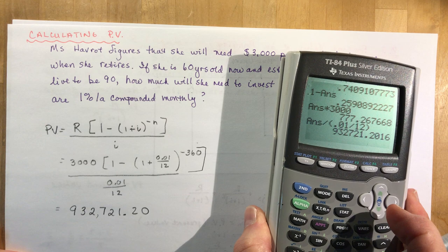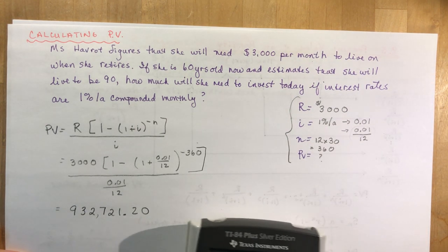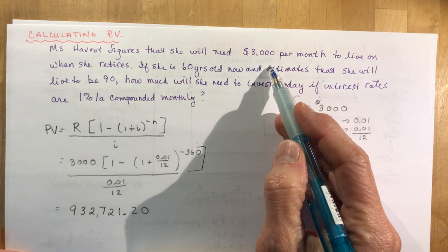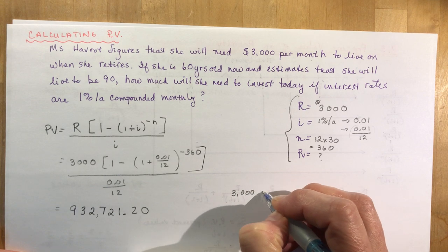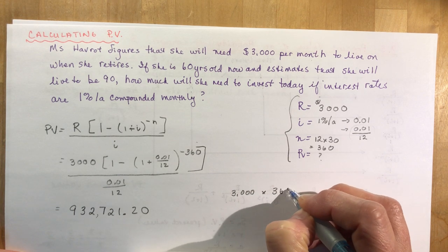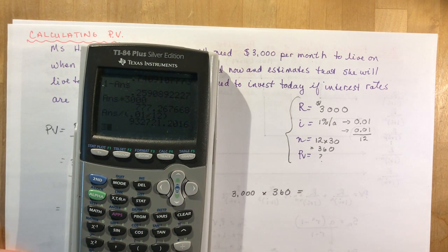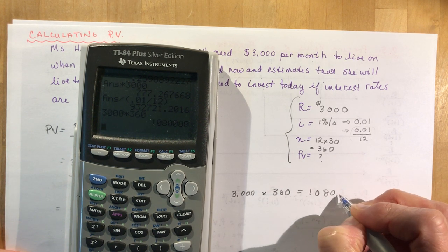Let's figure out here what we would have to do. Like if I just said, what if I needed 3,000 a month for 360 years, it should be more than that, right? So let's see what we get. 3,000 times 360 and I get 1,080,000.